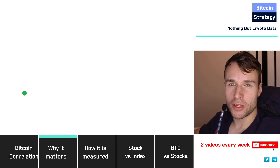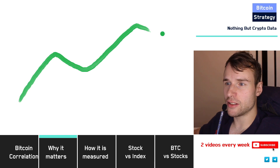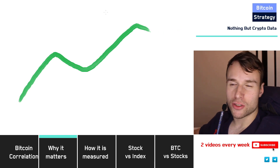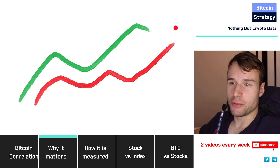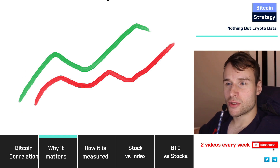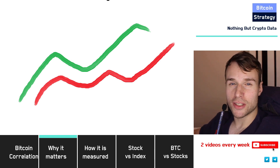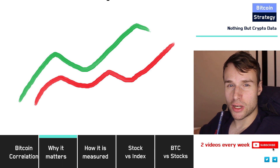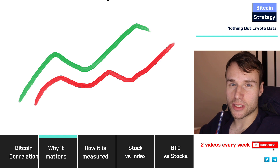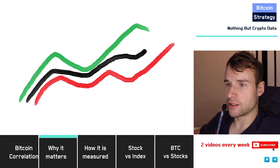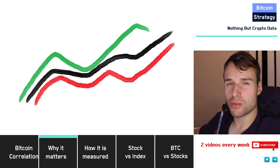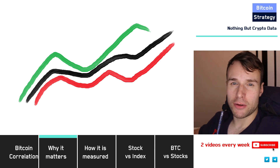Say you have asset one in green — it moves something like this. And then we have asset two in red, and it moves pretty similar to that, maybe slightly different, but pretty similar. Those two assets now have a high correlation. The problem with high correlation is when you combine those two assets into a portfolio, you have a very similar performance line. In the end, you could have just bought one of the assets and gotten a very similar return.